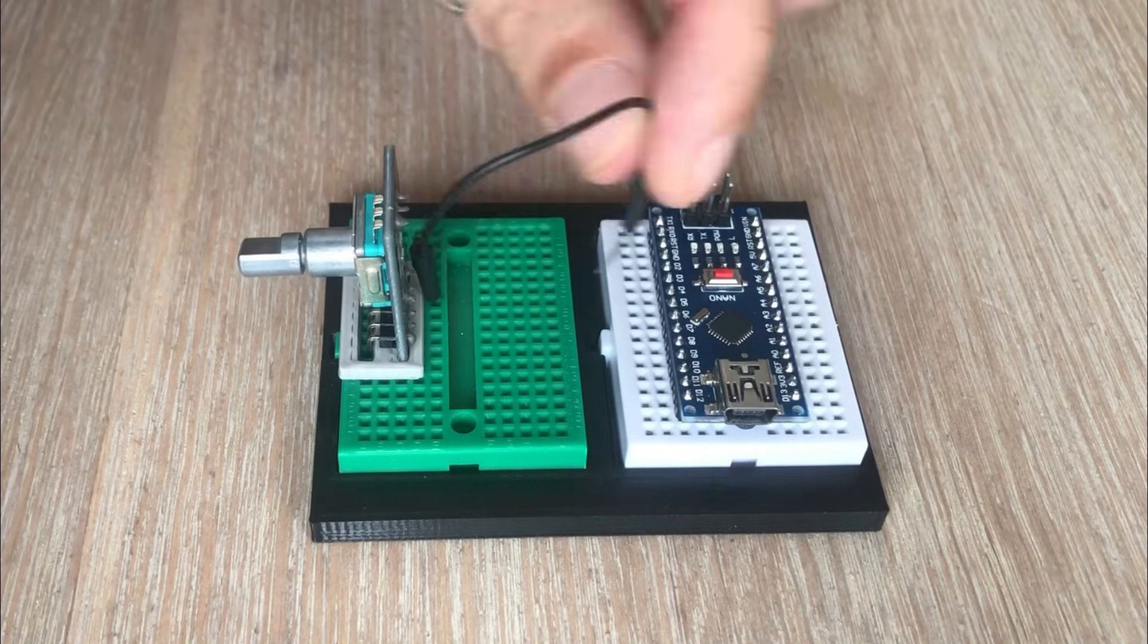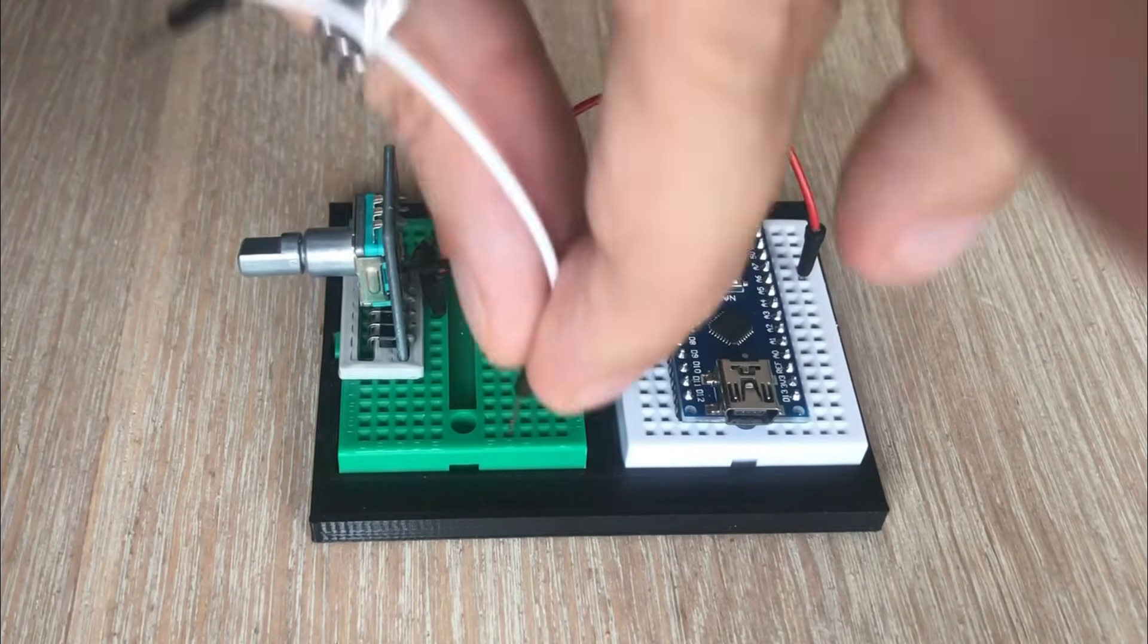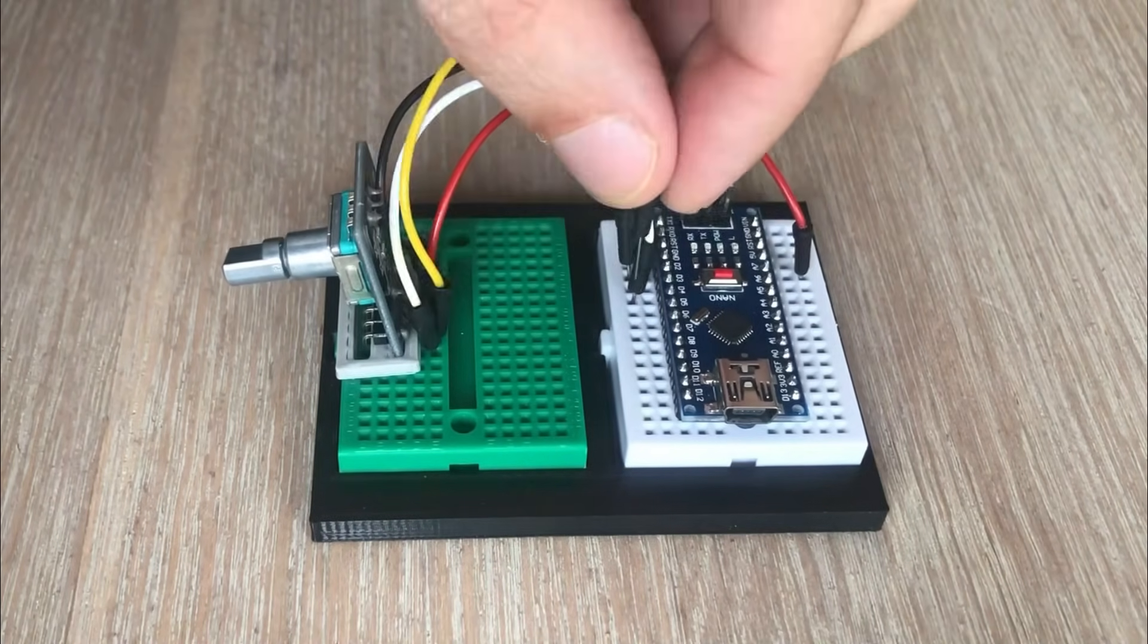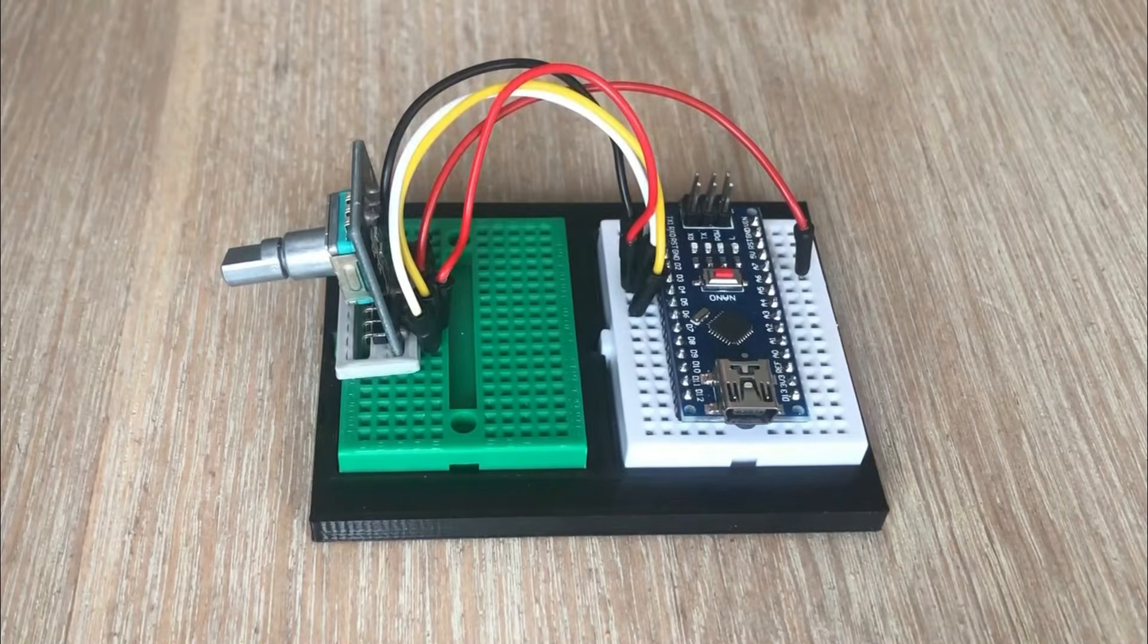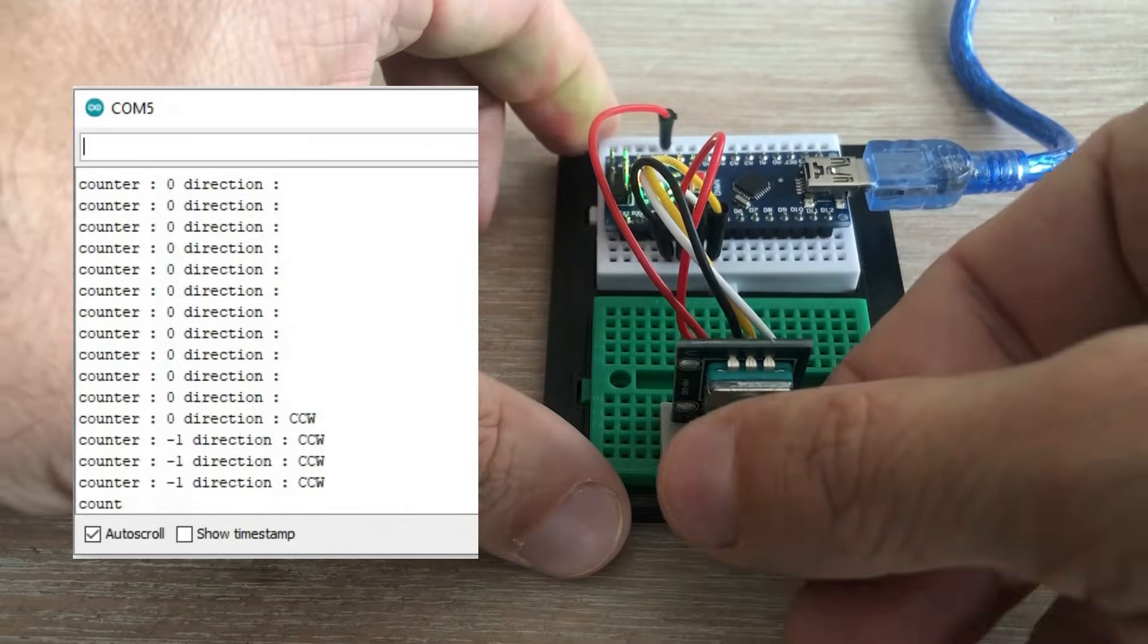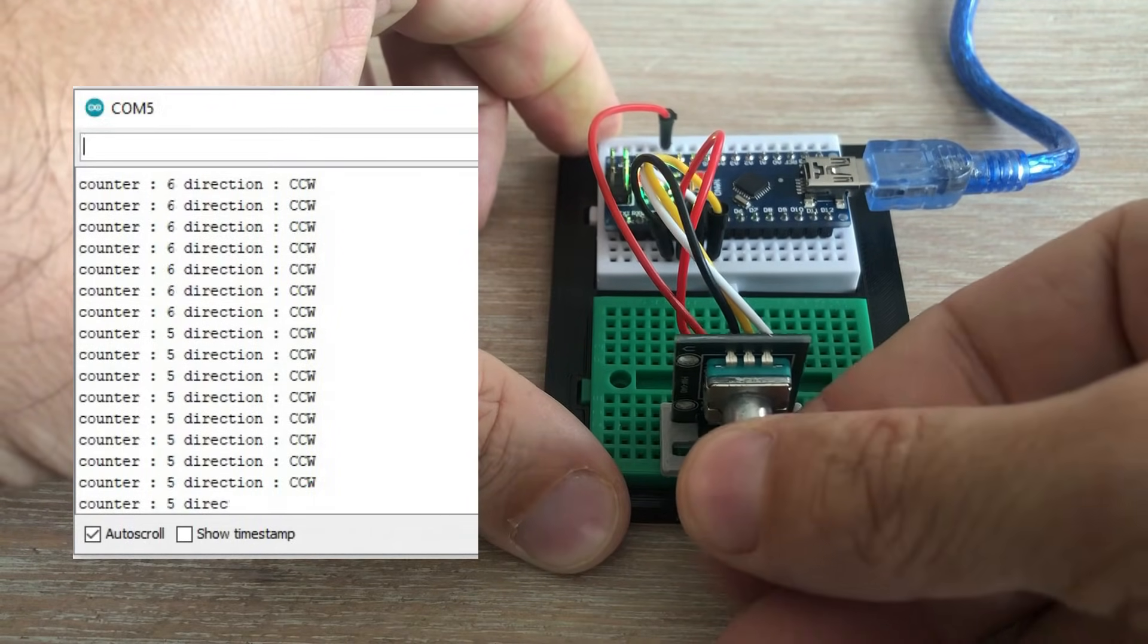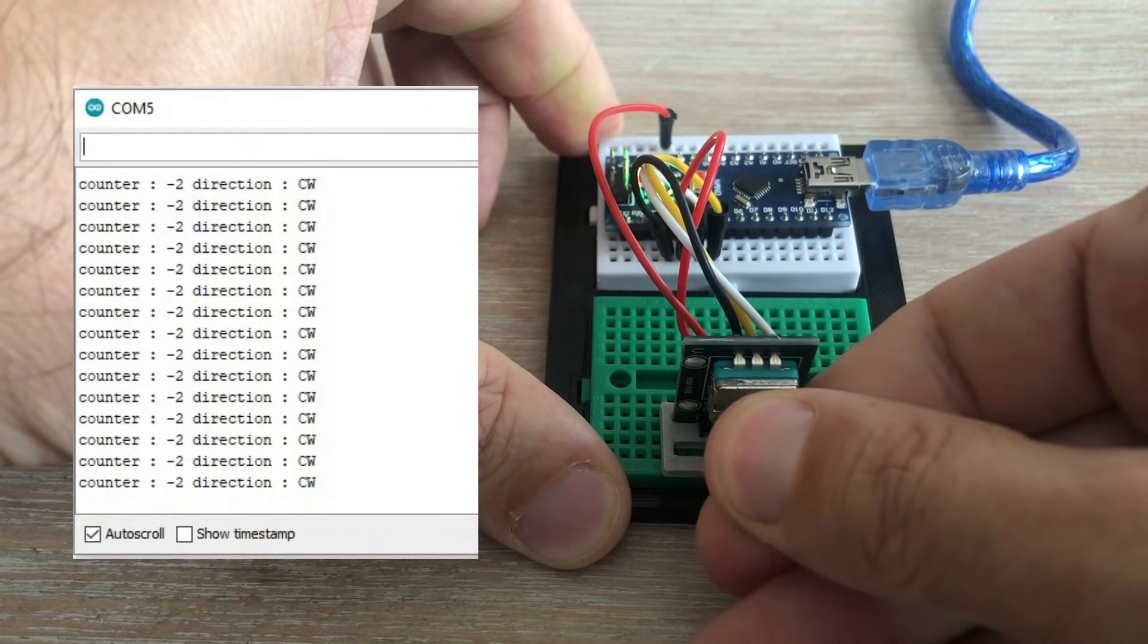Let's connect the encoder to Arduino starting with ground, 5 volts, then clock pin, data pin and finally SW pin. Let's load the code and open the serial monitor. You can see that you can increase the counter by turning the shaft right and decrease it by turning the shaft left. The counter value can go below zero.